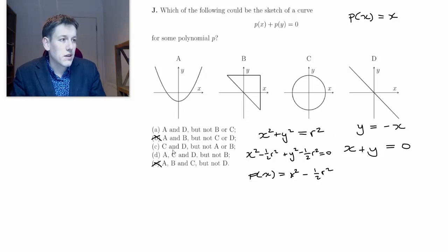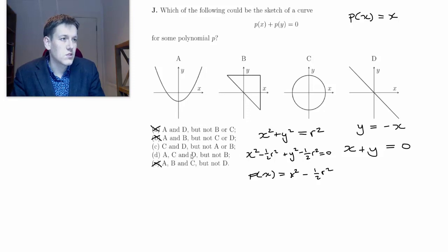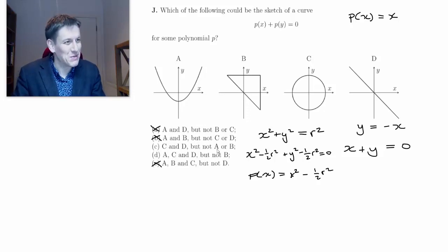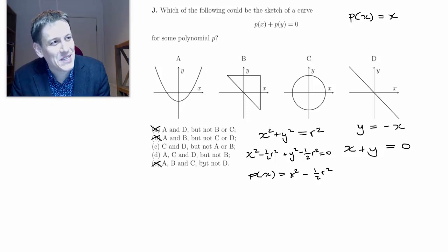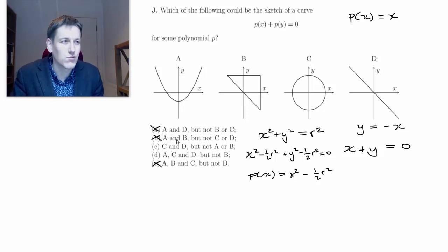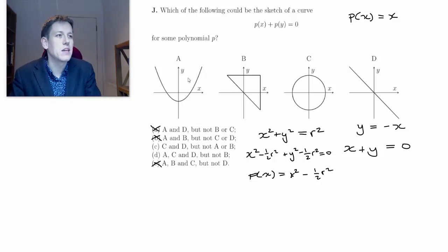Since c works, that means we've also ruled out answer option a. So c and d are the only options left. The answer choices say either c and d can be written like this, or a, c and d. Neither of these includes b, so I don't have to be more rigorous about b - it's not even an option anymore. I just need to decide whether curve a can be written like this.